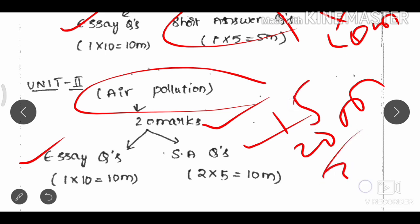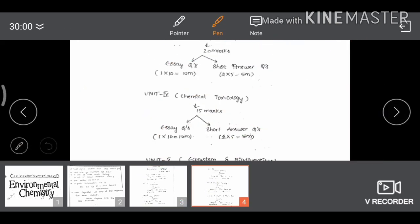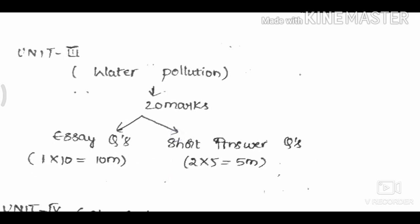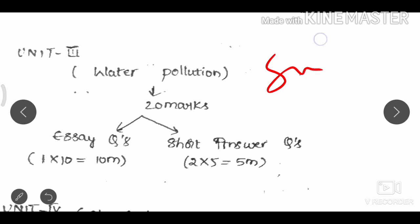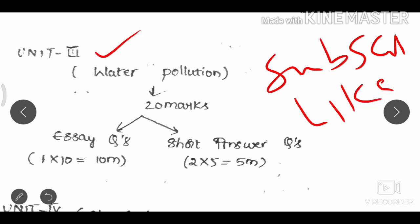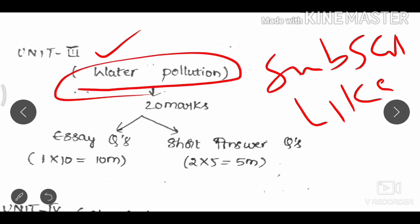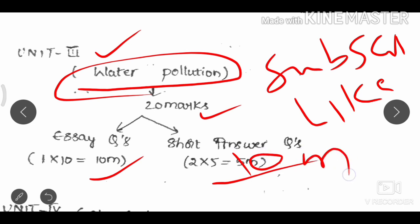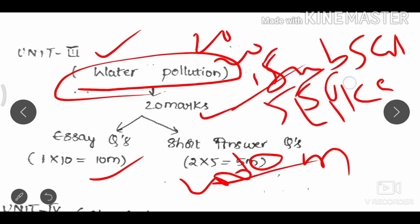Unit 3 is Water Pollution, which carries 20 marks. With choice-based questions, you can target around 10 marks through short answers and 10 marks through essays within this unit.